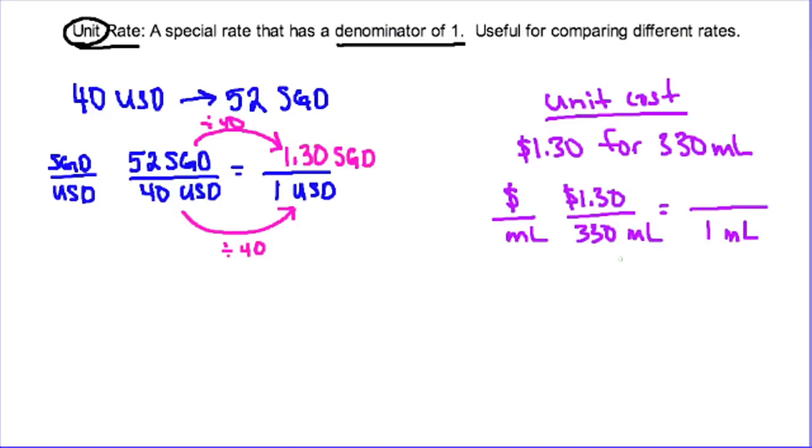In this case, to change 330 into one, I need to divide by 330. I'm going to do the same thing on the top, and I'm going to get something really small here. When I do that, I get 0.0039, and that 39 is repeating. So the cost of one milliliter of that beverage is 0.0039 dollars, or it's 0.39 repeating cents, probably 0.4 cents. So that's the unit cost of that particular drink.